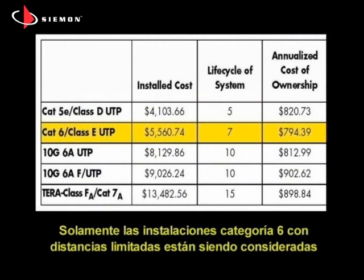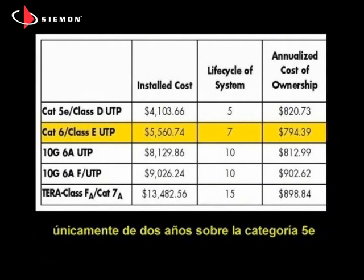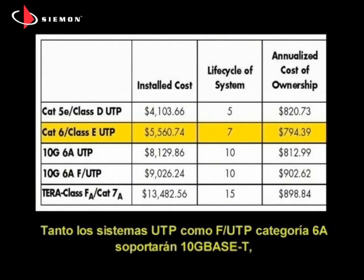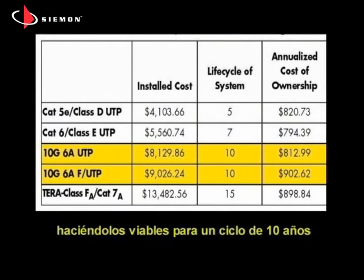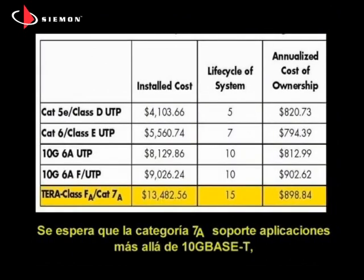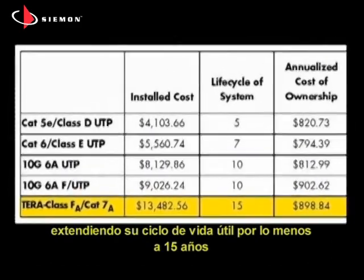Only legacy Category 6 installations are being considered for 10 gigabit applications over a limited distance, giving Category 6 only a 2 year advantage over Category 5E. Both UTP and F/UTP Category 6A systems will support 10G Base-T, making them viable for a full 10 year life cycle. Category 7A is expected to support applications beyond 10 gigabit Ethernet, extending its useful life cycle to at least 15 years.